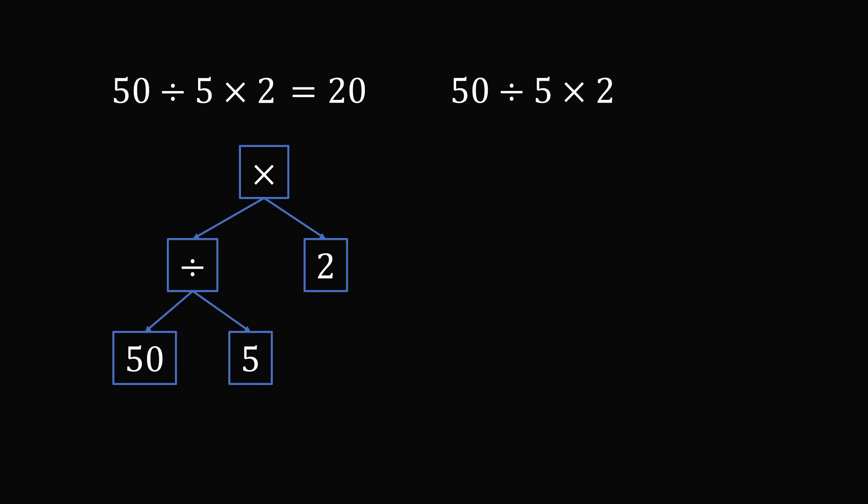On the other hand, if you do the multiplication first, you would have 5 times 2 as a subtree. You would take that result, and then you do 50 divided by that result. And according to this expression tree, we would end up with the result of 5.